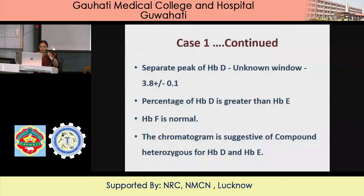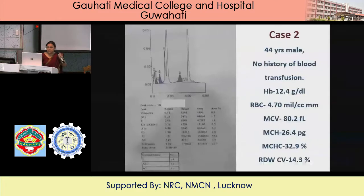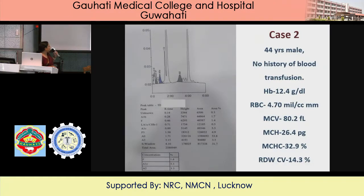To summarize: separate peak in the unknown window, retention time 3.8 ± 0.1, percentage of D is greater than E — that also has to be remembered. F is normal, and the chromatogram is suggestive of compound heterozygous for hemoglobin D and E. Next case: 44-year male, no history of blood transfusion, hemoglobin 12.4.